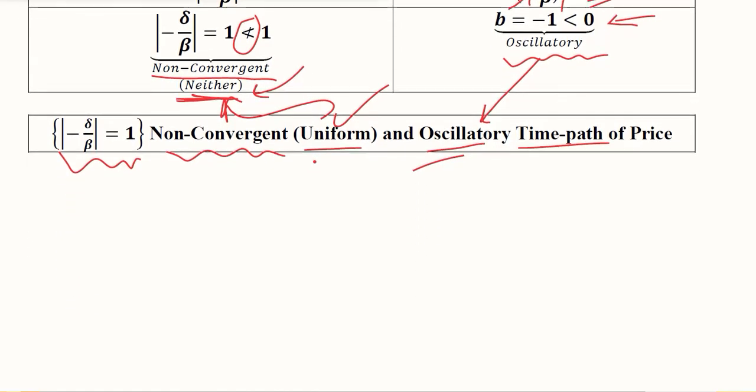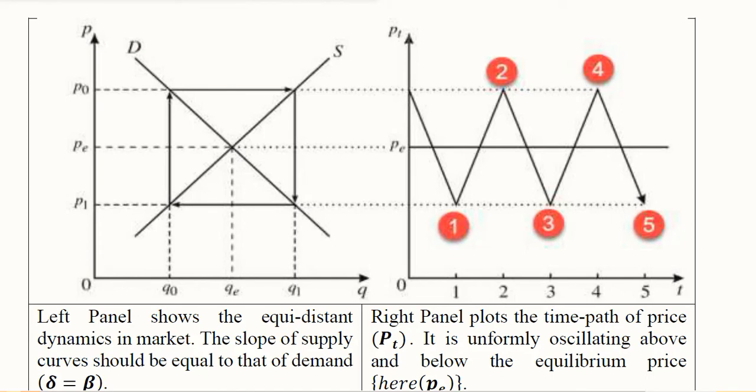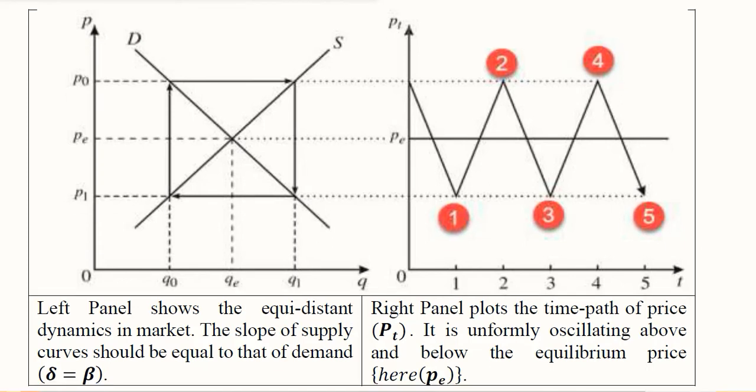Let's see the diagram so that we get clear about it. Referring to the previous video where we saw the convergent and divergent diagrams, this is the uniform oscillation. The price at equilibrium is this and this is from where we begin the journey.